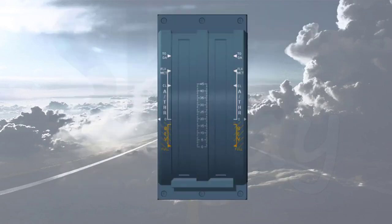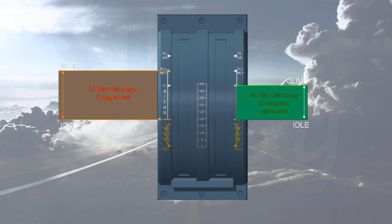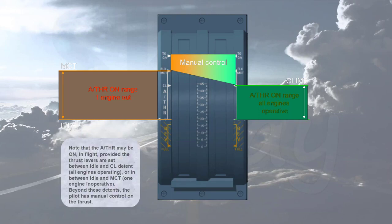Note that the autothrust may be on in flight provided the thrust levers are set between idle and climb detent with all engines operating, or between idle and MCT with one engine inoperative. Beyond these detents, the pilot has manual control of the thrust.